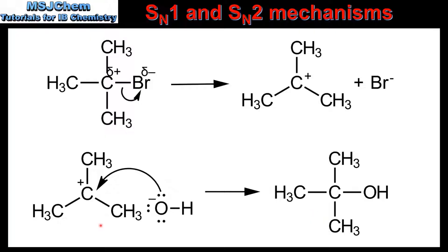An important point to note is that the carbocation has a trigonal planar geometry. Because of this geometry the nucleophile can bond from either side of the carbocation. This has important implications for the stereochemistry of the SN1 mechanism, which is covered in more detail in a later video.